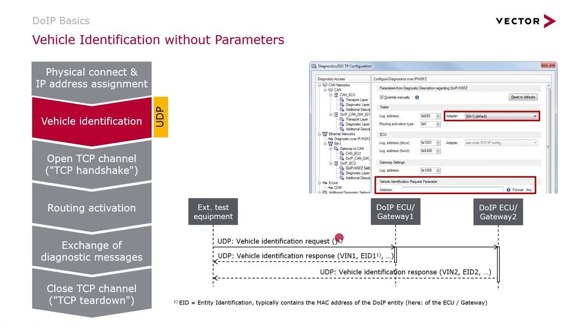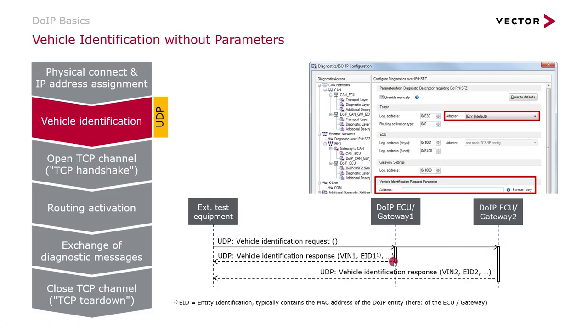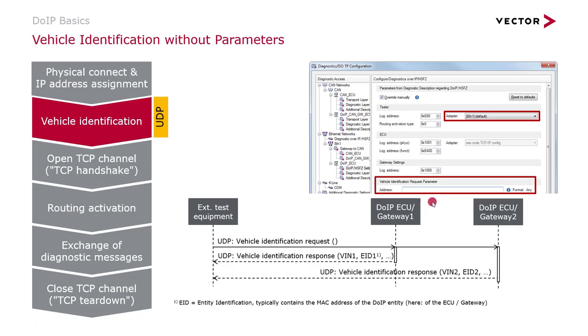The vehicle identification request can be sent with or without parameters. If sent without parameters, like in this example, this is like asking the network who's there. All ECUs or all vehicles in the network that receive this request will respond with their vehicle identification number via a vehicle identification response message. To send a vehicle identification request without parameters, just leave the address field empty. Additionally, it is necessary to select the correct adapter so that the IP address for the tester is used correctly.